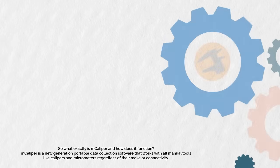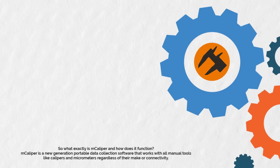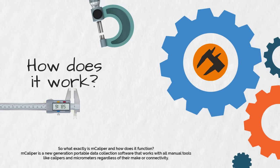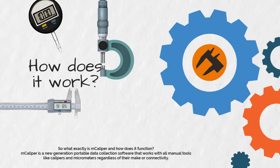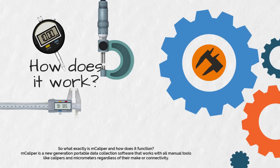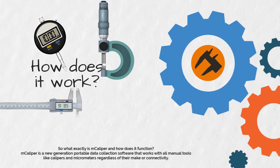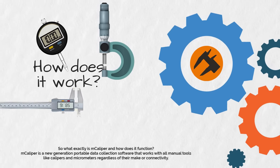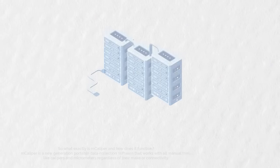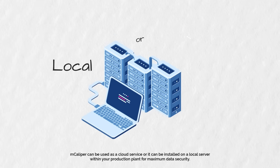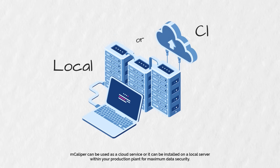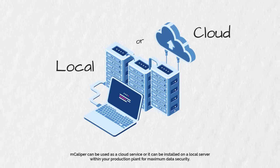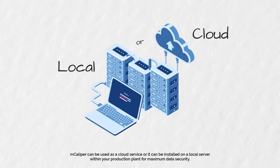So what exactly is MCALIPR and how does it function? MCALIPR is a new generation portable data collection software that works with all manual tools like calipers and micrometers, regardless of their make or connectivity. MCALIPR can be used as a cloud service or it can be installed on a local server within your production plant for maximum data security.